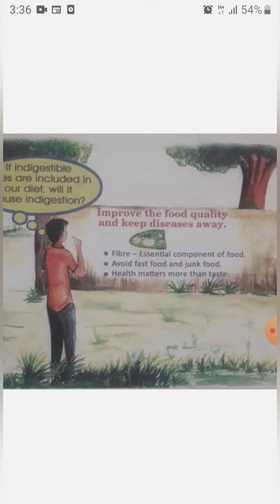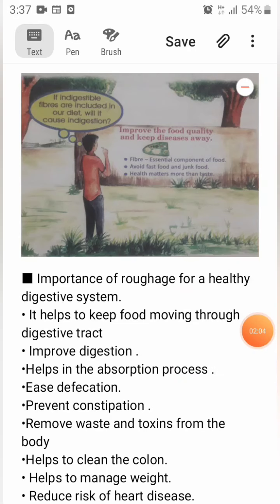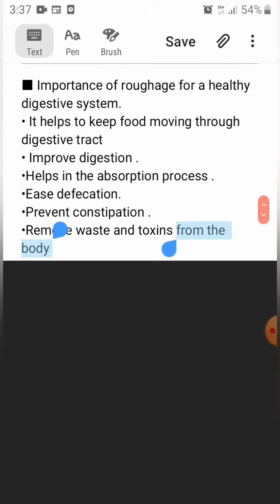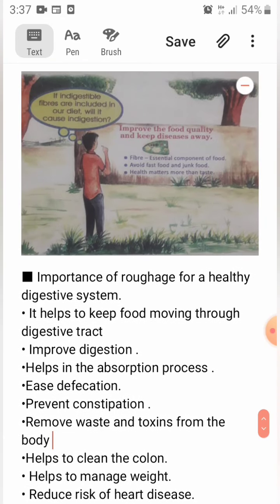The fiber content in cereals and vegetables does not undergo digestion, but it helps in the absorption process and thus protects the health of the digestive system. The importance of roughage for a healthy digestive system: it helps to keep food moving through the digestive tract and improves digestion; it helps in the absorption process; it prevents constipation; it removes waste and toxins from the body and helps to clean the colon; and it helps manage weight and reduce the risk of heart disease.